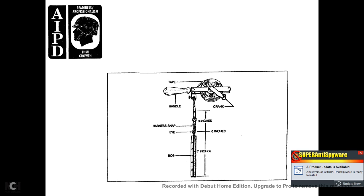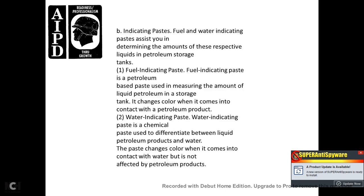The outage tape shows the handle, the tape, and the crank, with the bob at seven inches, then the eye, and three inches from the eye to the harness snap, marking zero inches.